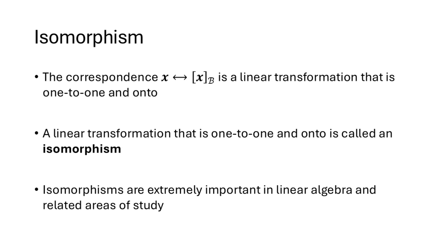Another thing to notice is that the correspondence between vectors and their coordinates is a linear transformation that happens to be one-to-one and onto. Any linear transformation that's one-to-one and onto is called an isomorphism. Isomorphisms are extremely important in linear algebra and related areas, and we'll talk about this isomorphism and why it matters in a future lecture.